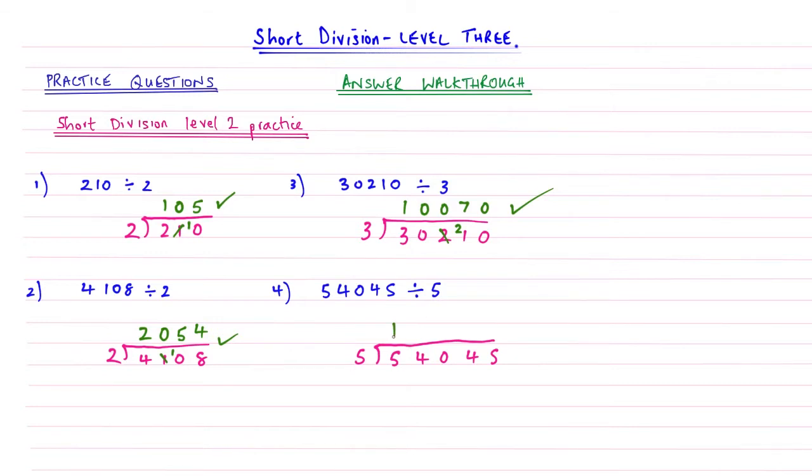How many 5's into 5? That's once. How many 5's into 4? 0, because 5 is bigger than 4, so we carry that 4, remembering to strike it out. 5's into 40 go 8 times because 5 times 8 is 40.